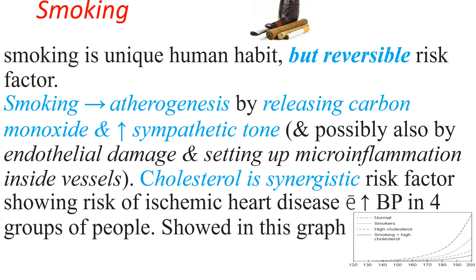Smoking is a unique human habit but a reversible risk factor, so it can be included in the plan for prevention and control of ischemic heart disease. Smoking leads to atherogenesis by releasing carbon monoxide, increasing sympathetic tone, and possibly also by endothelial damage and setting up micro-inflammation. Cholesterol is a synergistic risk factor, as shown in the blood pressure curve discussed earlier.